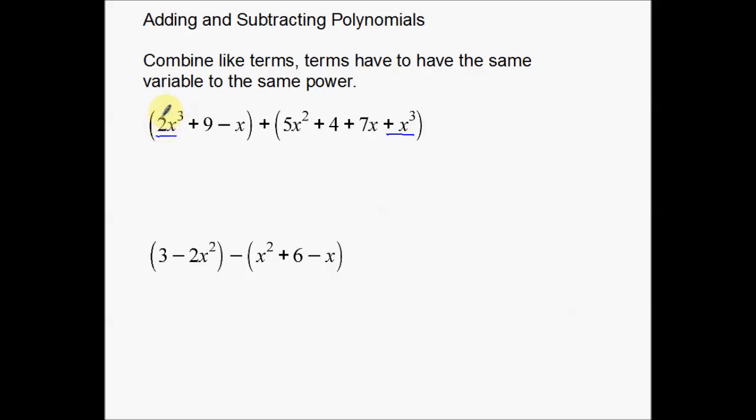Now, again, a little bit of vocab. Coefficients are the numbers in front of the variables. So, in this case, a two and in this case, a three. So, I simply just want to add those together. So, in this case, I'm going to get 3x³. Okay. Notice that the variables didn't change. X's stayed x's. The cubes there, the three stayed three, but it's the coefficients, the numbers out front. That is what's going to change.